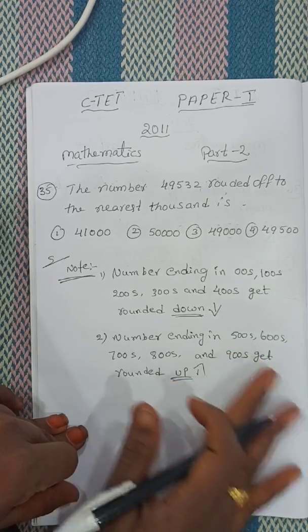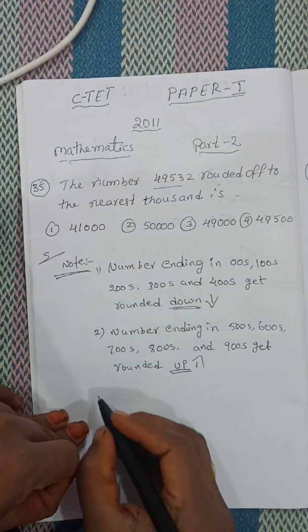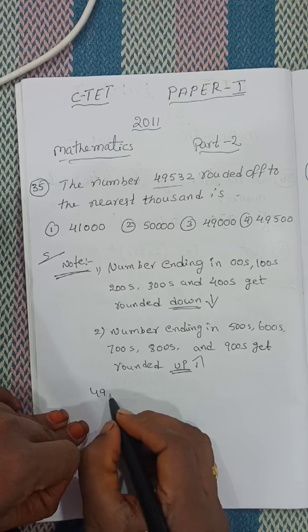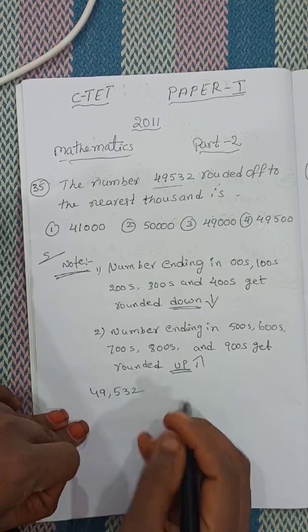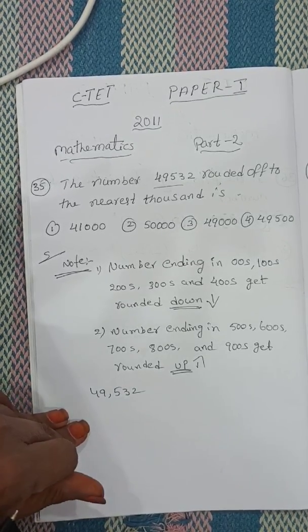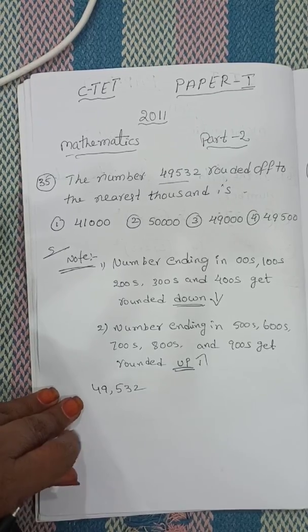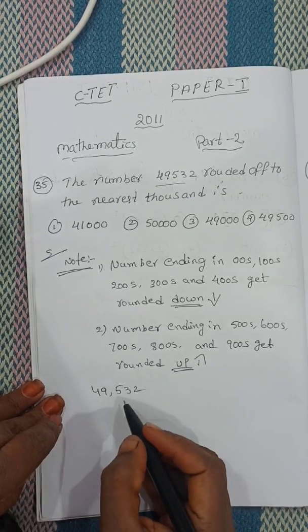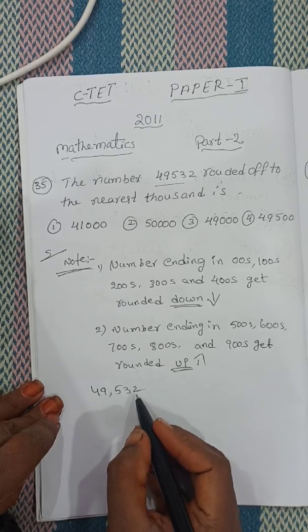Following this note, what is the given number here? 49,532. First, you give the place values.